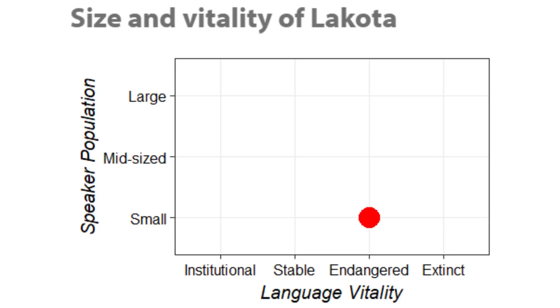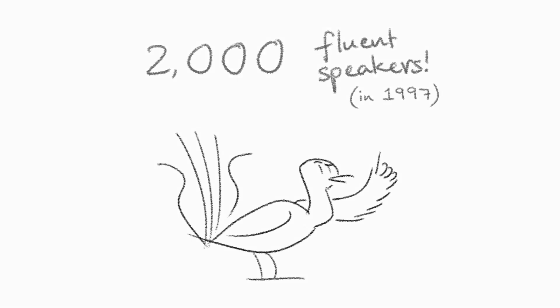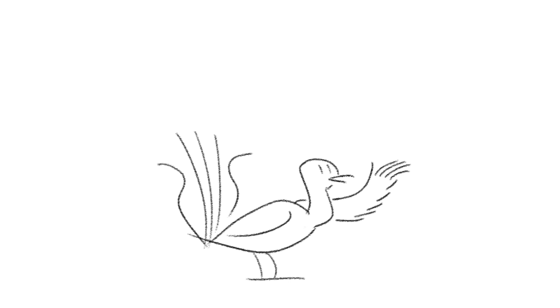Ethnologue currently classifies the language as endangered, and there are around 2,000 fluent speakers according to a 1997 census — which, yes, I am aware was over 20 years ago, but that's literally all I've got to go on. If anyone knows where I can find any current statistics, don't hesitate to leave your comments down below.